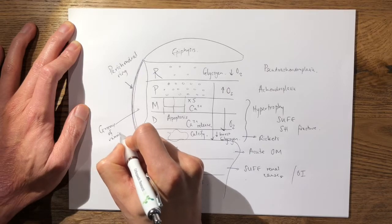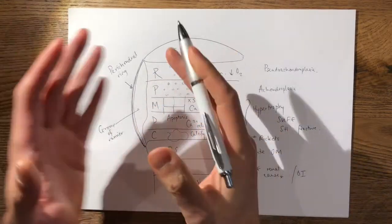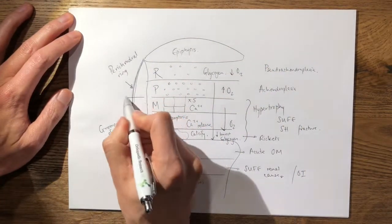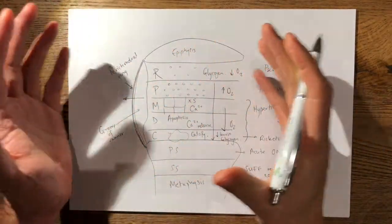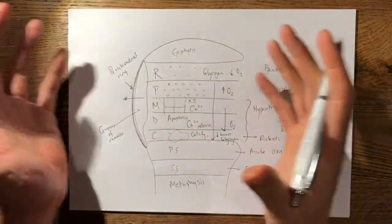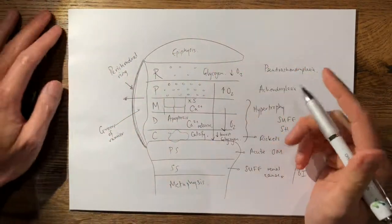But on the inside you have the groove of Ranvier, which supplies the periphery of the growth plate and is responsible for appositional growth, so the growth in terms of the width of the growth plate.